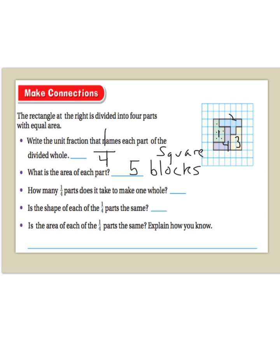Now, how many 1 fourth parts does it take to make up the whole? That's an easy one. So, our whole is 4, and to fill that, we need 4. So, 4 fourths would make 1 whole. Now, is the shape of each of the 1 fourth parts the same? Well, if I look at my picture, the green is not the same as blue. It's not the same as purple, and it's not the same as the tan. So, are they the same shape? No.